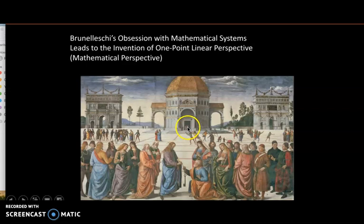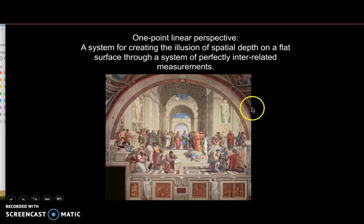Artists like Raphael who master Brunelleschi's one-point linear perspective system can create this amazingly consistent illusion. The spatial depth within that illusion is so deep, and it feels like nothing is out of proportion because it's all about measurement.